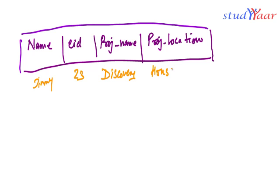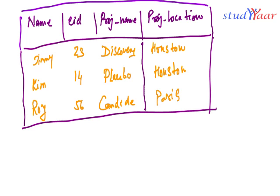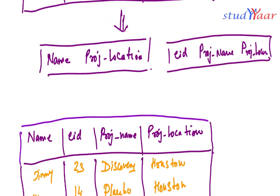Suppose I have Jimmy, his employee ID is 23, he's working on a project named Discovery, and he's working in Houston because the project is located there. Then I have Kim, whose employee ID is 14, she's working on a project named Placebo, also located in Houston. Then I have Roy, employee ID 56, working on a project named Candide, located in Paris.